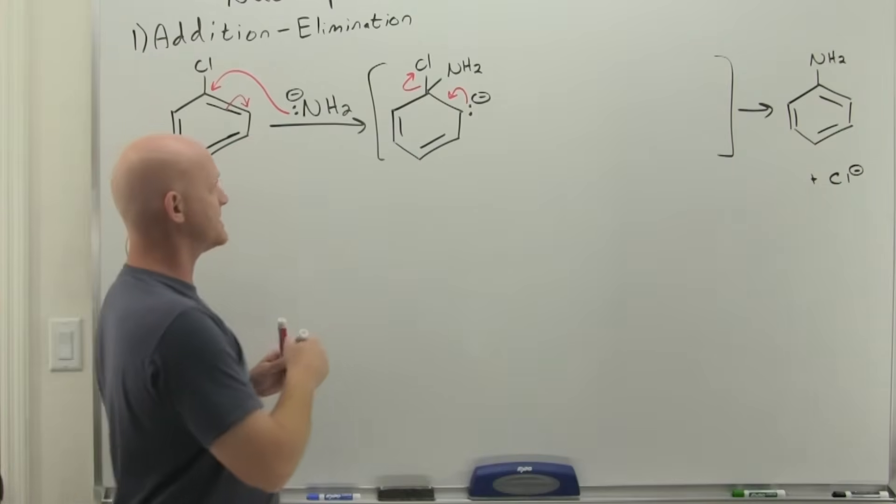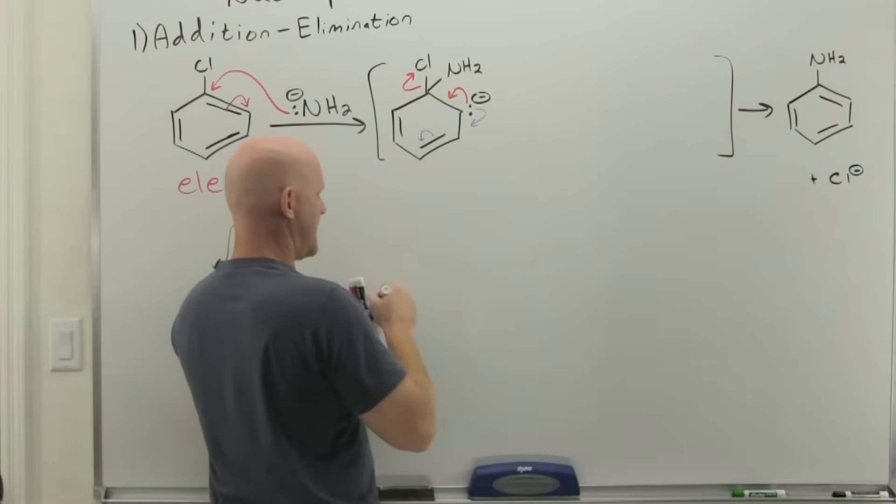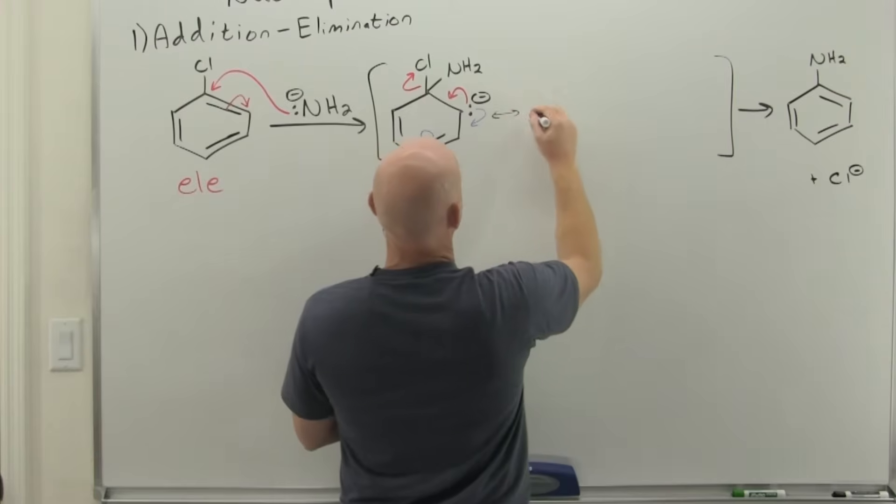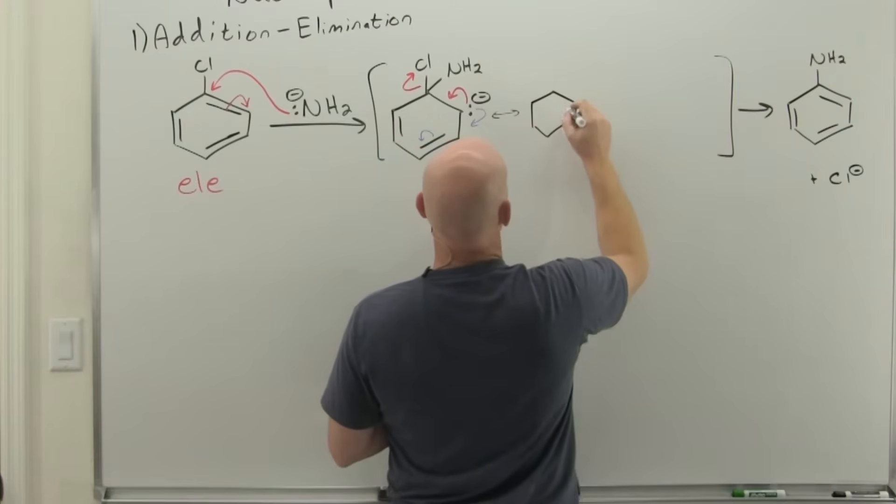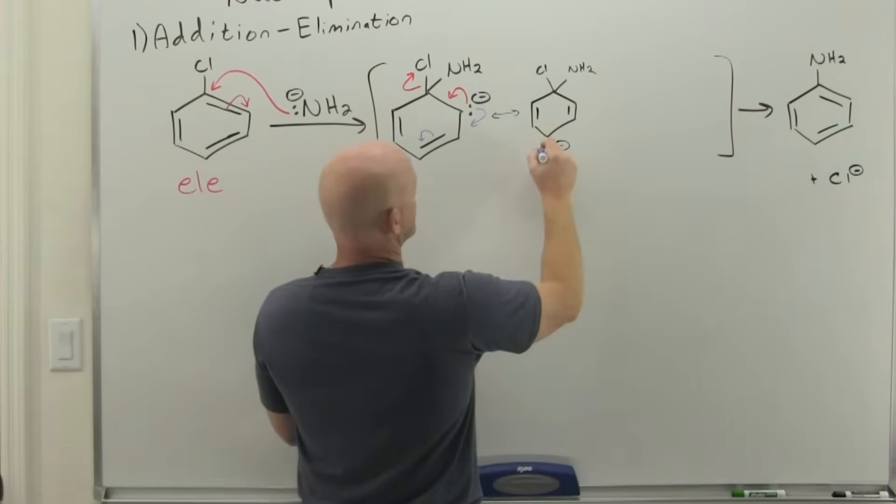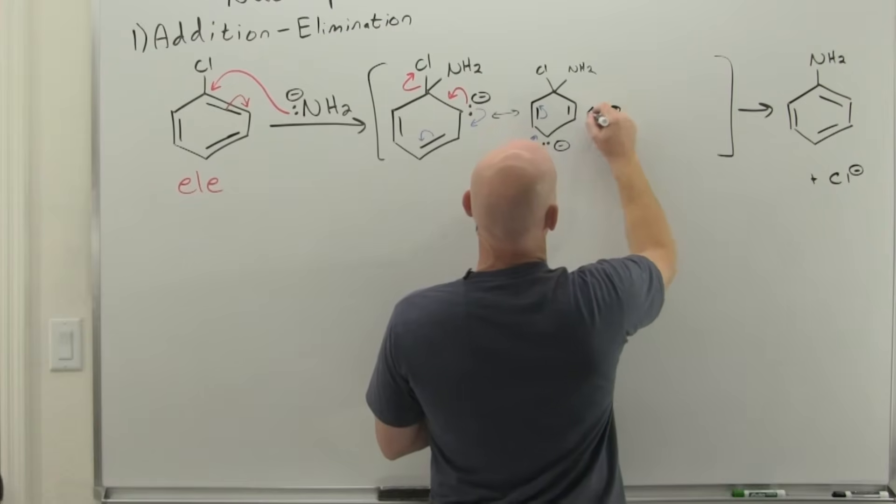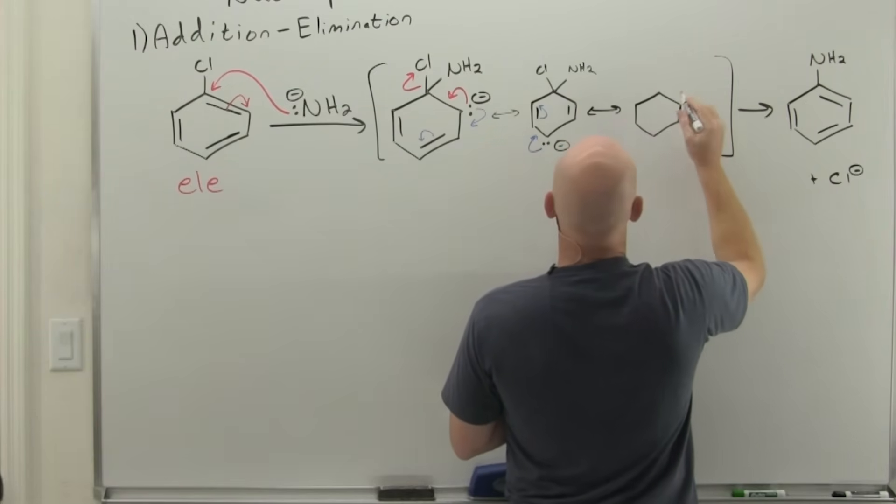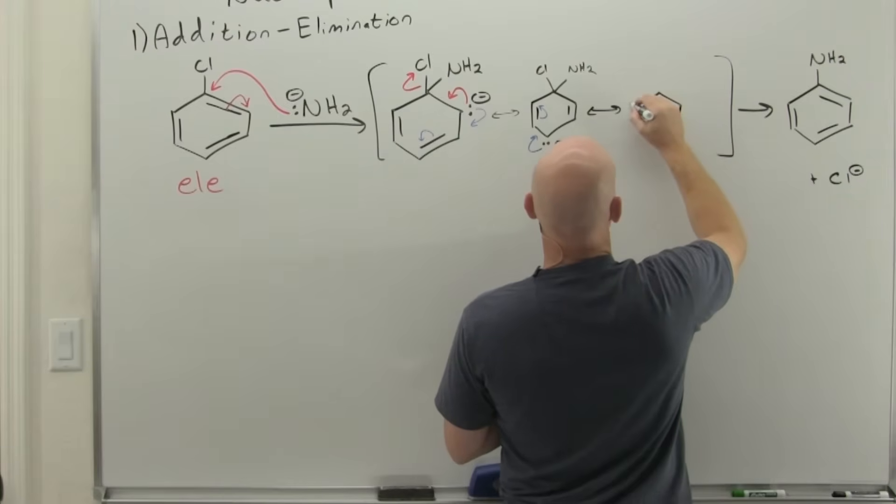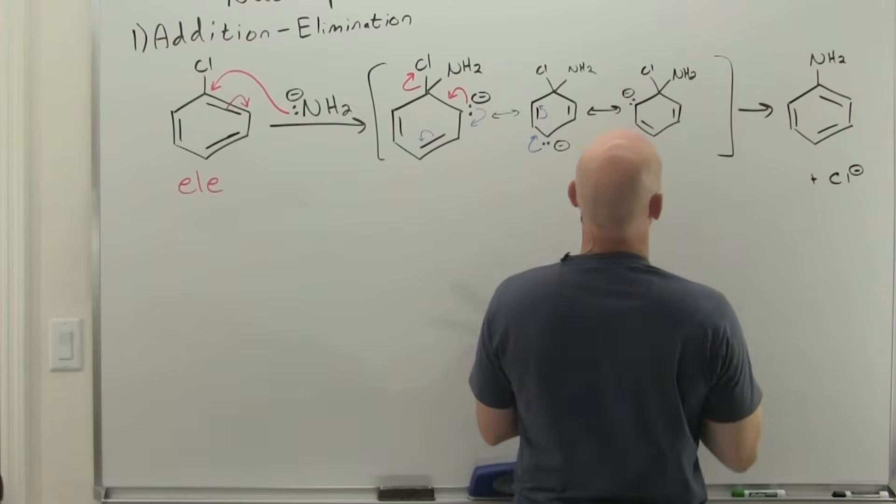Let's go ahead and show the resonance going on here as well. The resonance involved would be, lone pair becomes a pi bond, pi bond becomes a lone pair. Same thing, we're one bond away from a pi bond still, and so lone pair is going to become a pi bond, pi bond is going to become a lone pair. And we'll get our third resonance structure.